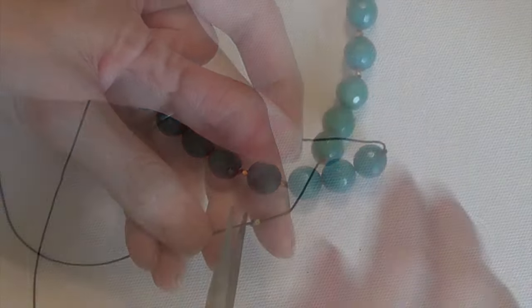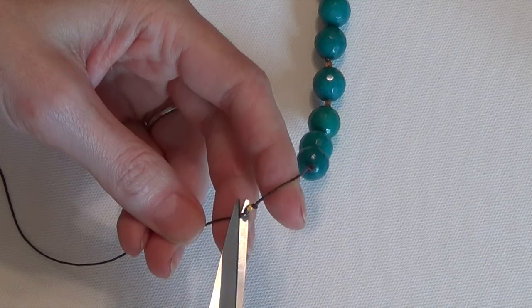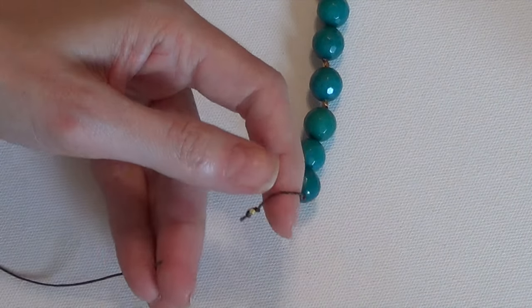Snip the end about two to three millimeters away from the last knot using some really sharp scissors, and then we're ready to finish off the bracelet.